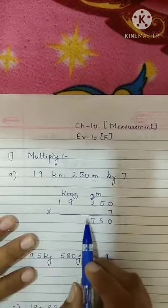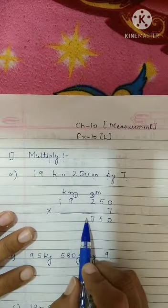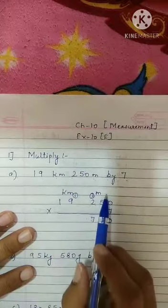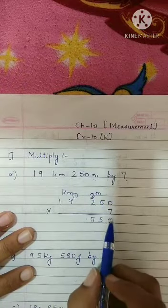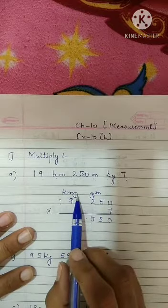Why I have not written 1 over here? If I will write 1 here, 1 Kilometer is equal to 1000 meters. It will become 1700, more than 1000. That is why we are carrying over 1.